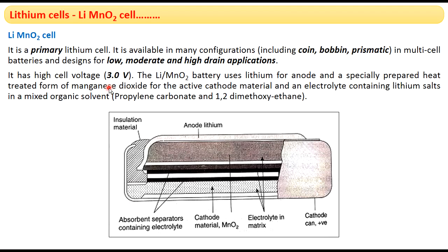Manganese dioxide, MnO₂, is heated and used as the active cathode material. The electrolyte is a mixture of mixed organic solvents and lithium salts. Specifically, propylene carbonate and 1,2-dimethoxyethane are mixed together and then combined with lithium salts. This combination is used as the electrolyte in the lithium MnO₂ cell.